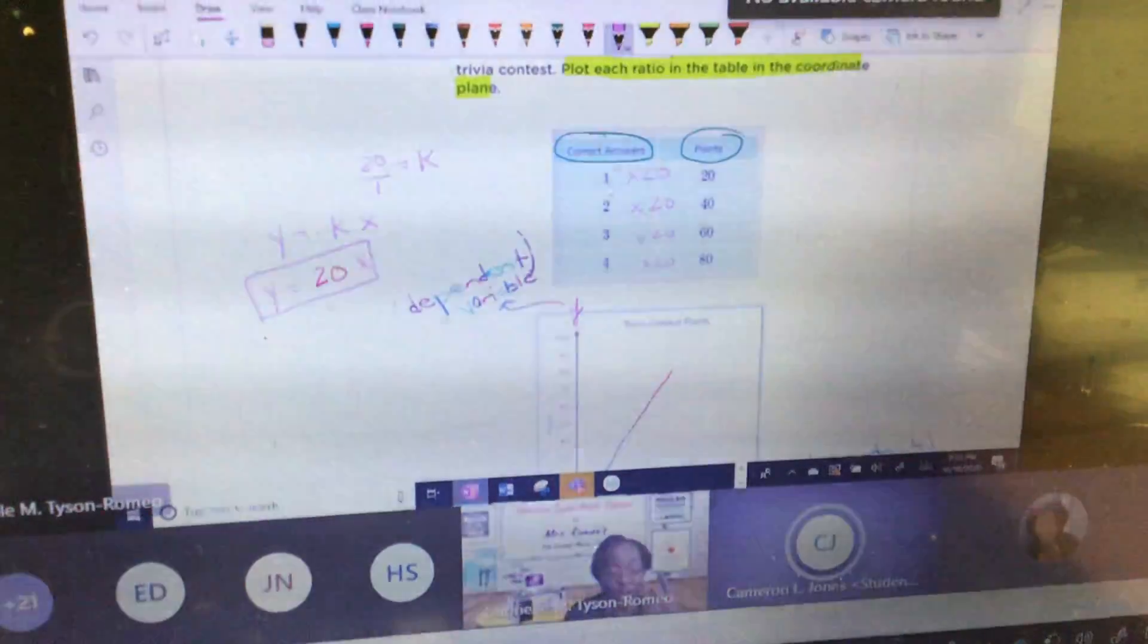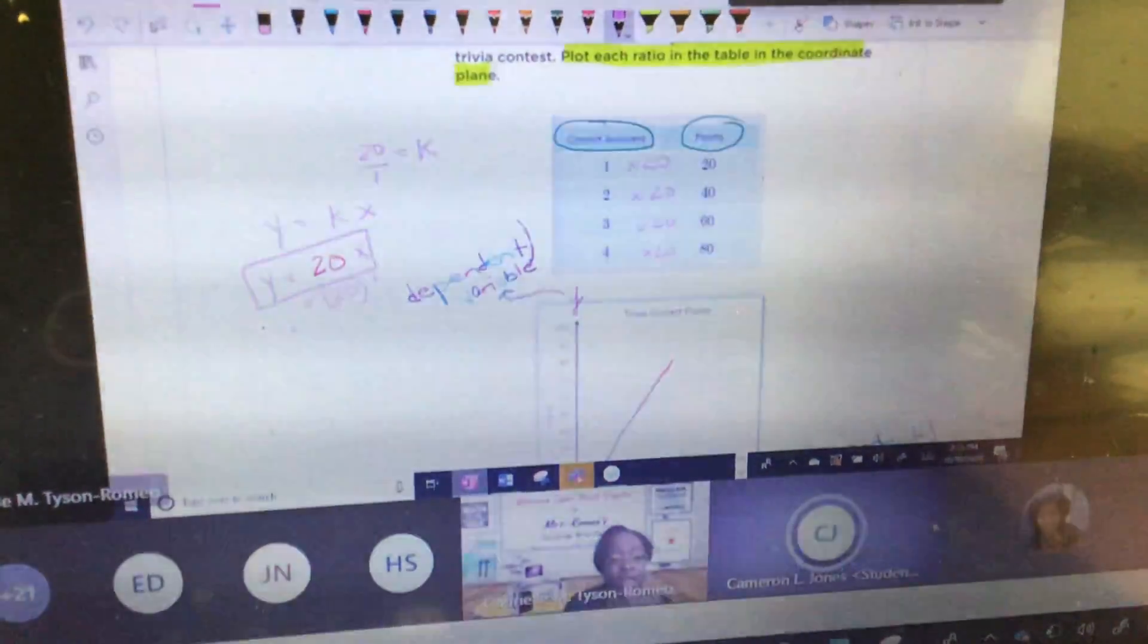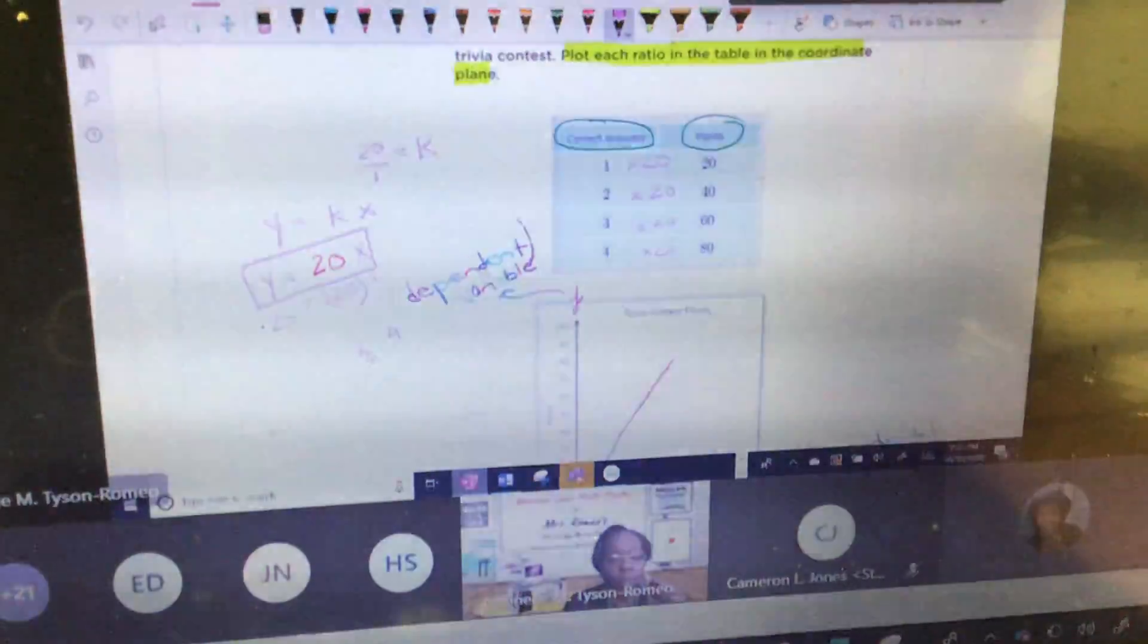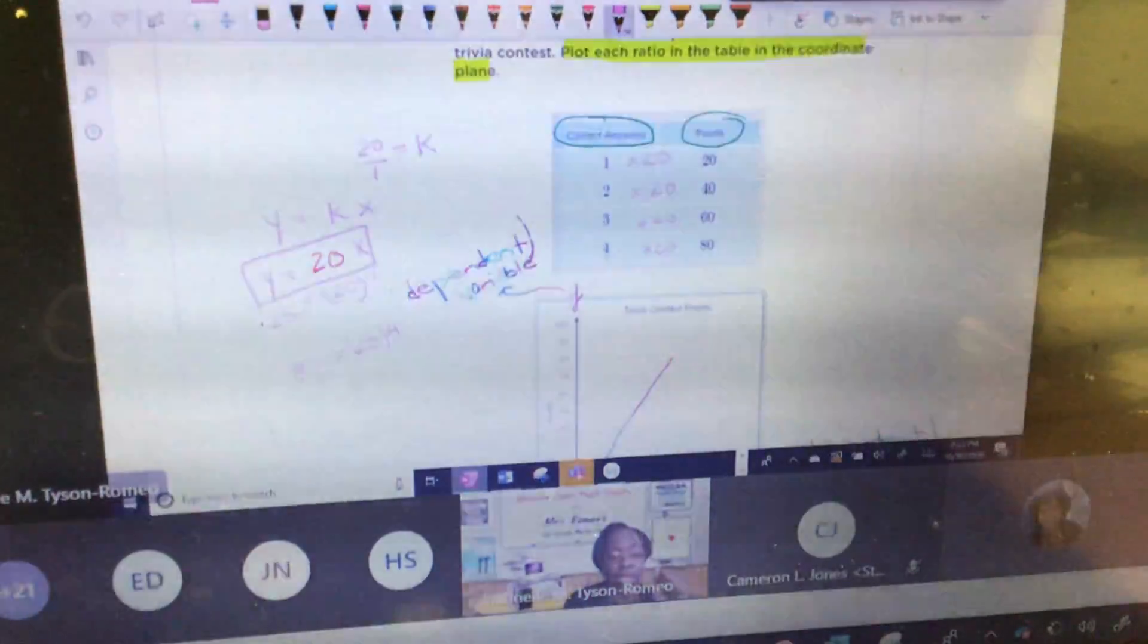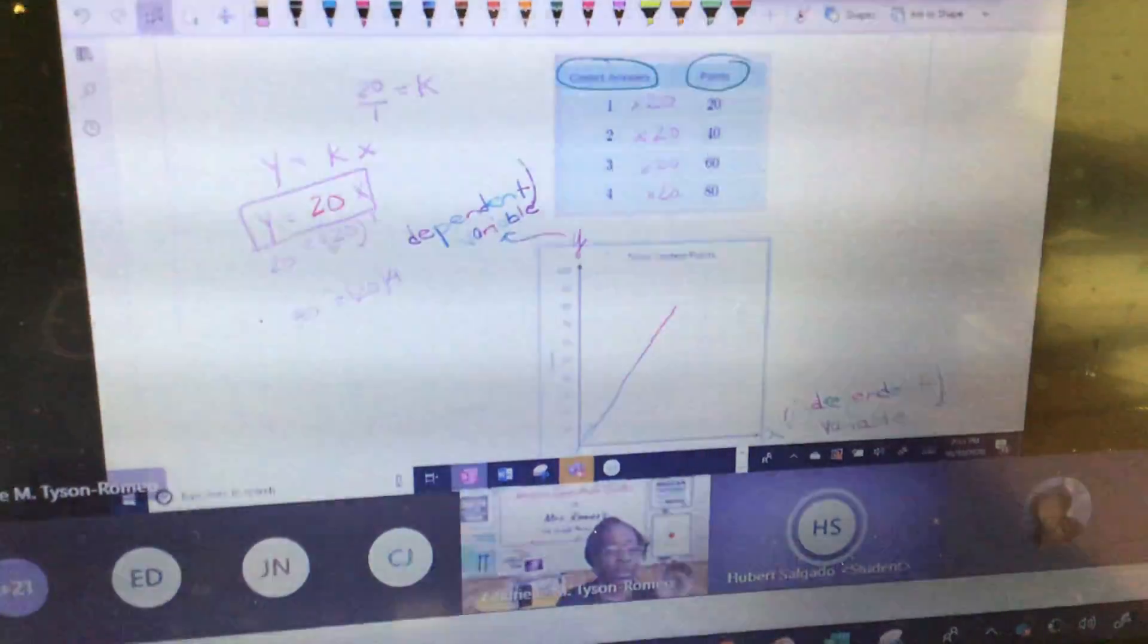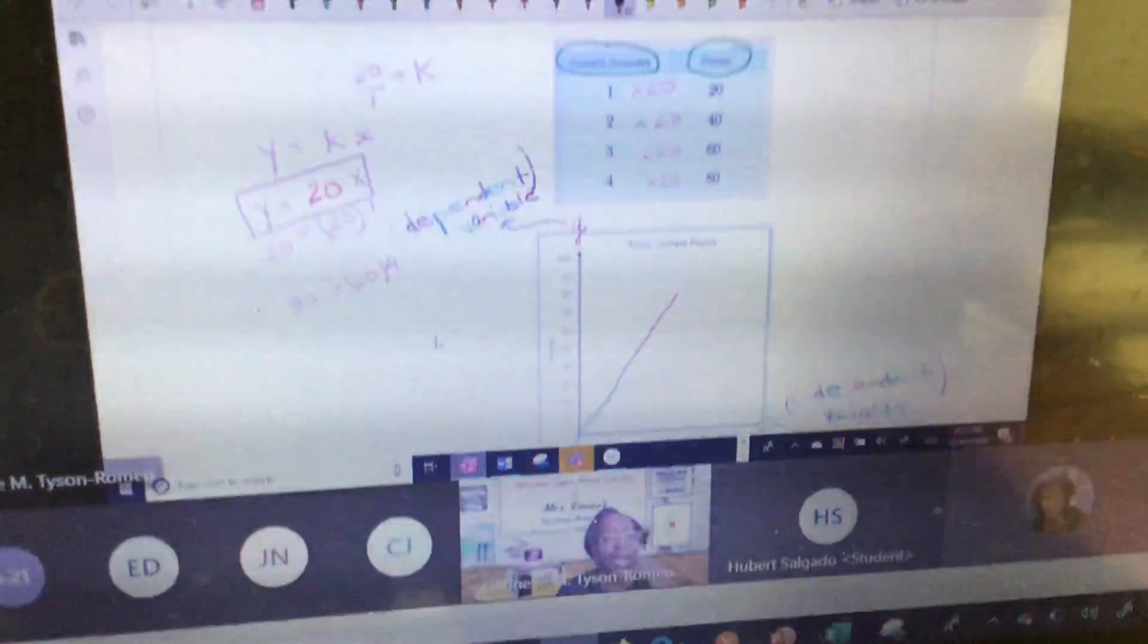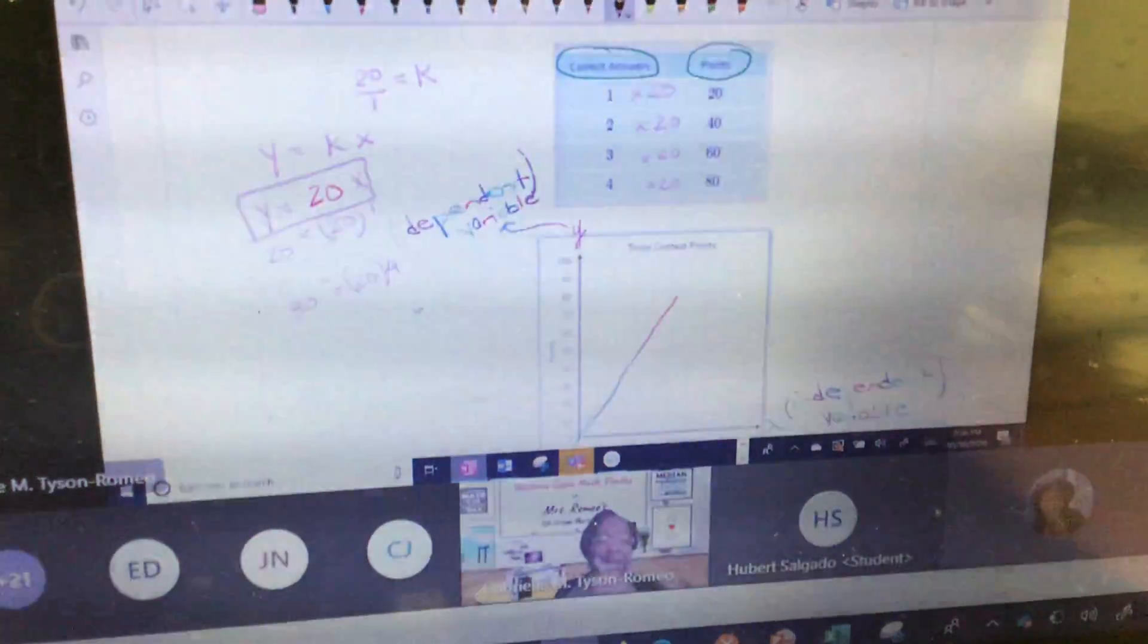Yes. If I plug in one, if I get one correct answer times it by my constant, will that give me my points which is my y? Yes. I'm going to go to four. I have four questions correct, I get 20 points per question, that's my constant of proportionality, I should get 80 points in total. Capisce? So y is always going to be the unit, right? Not necessarily. Y is going to be your dependent variable. It's the one that depends on what happens to your x.